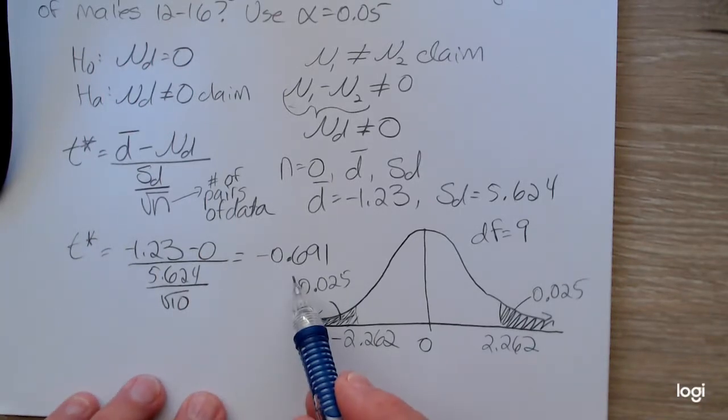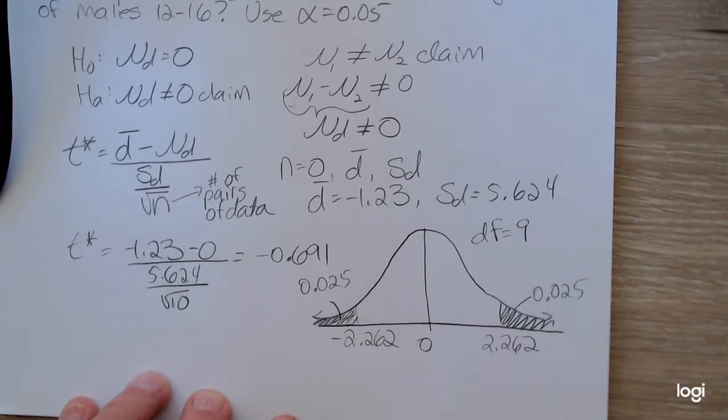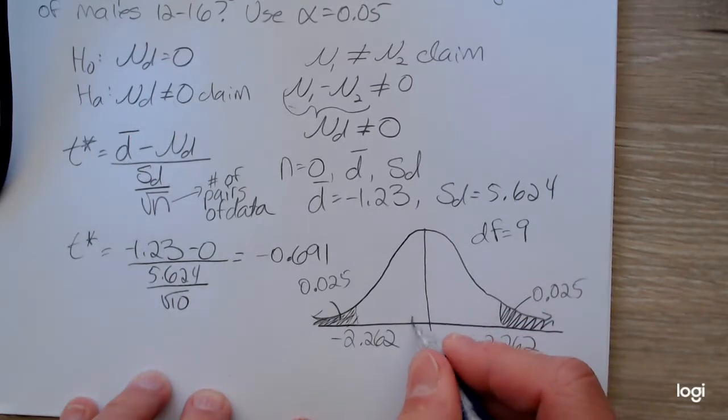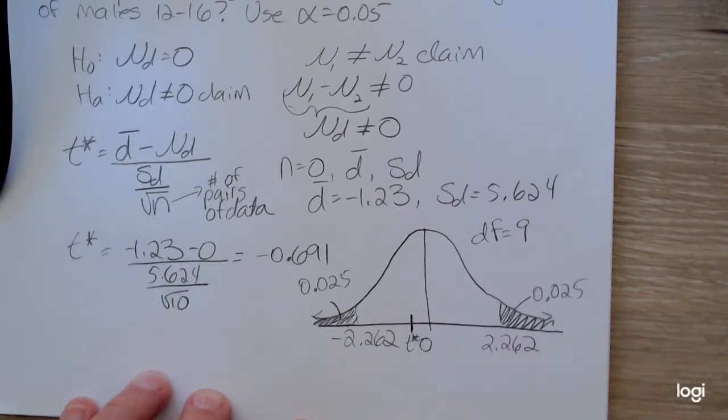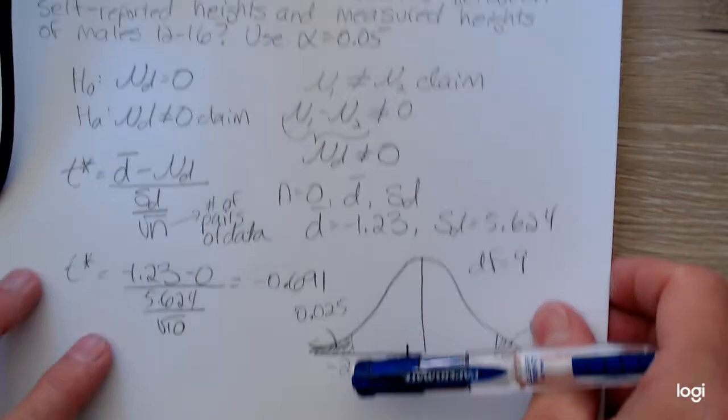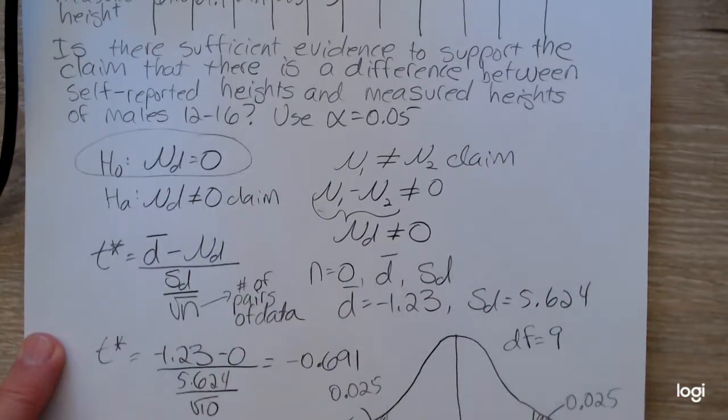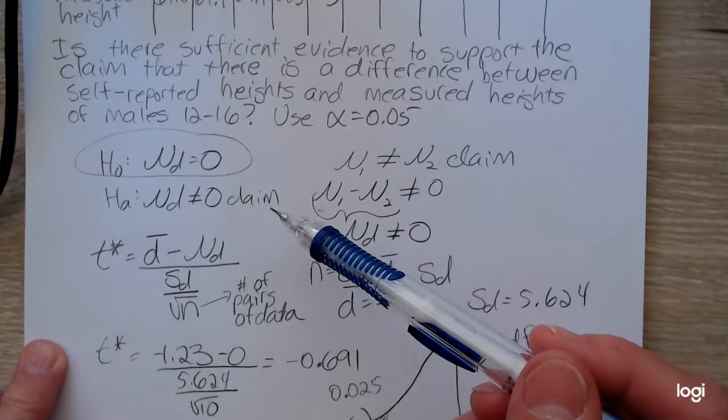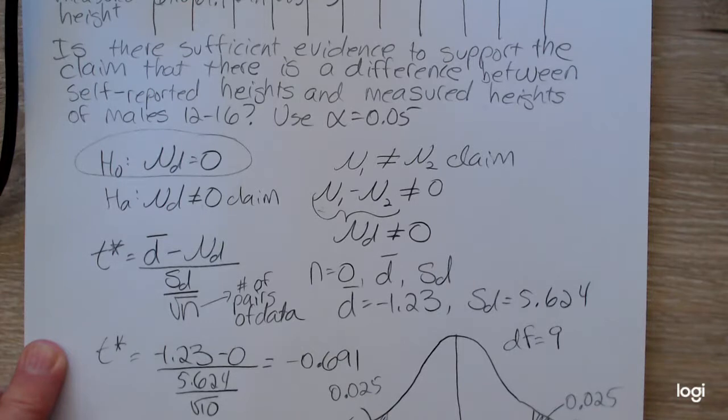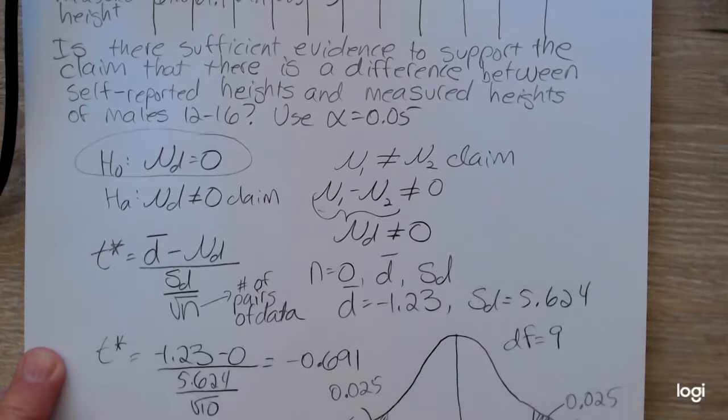Comparing where the standardized test statistic is placed with respect to these critical values, the standardized test statistic is in the fail to reject region. So the decision is to fail to reject the null. The conclusion will be that there is not enough evidence to support the claim that there is a difference between self-reported heights and measured heights.